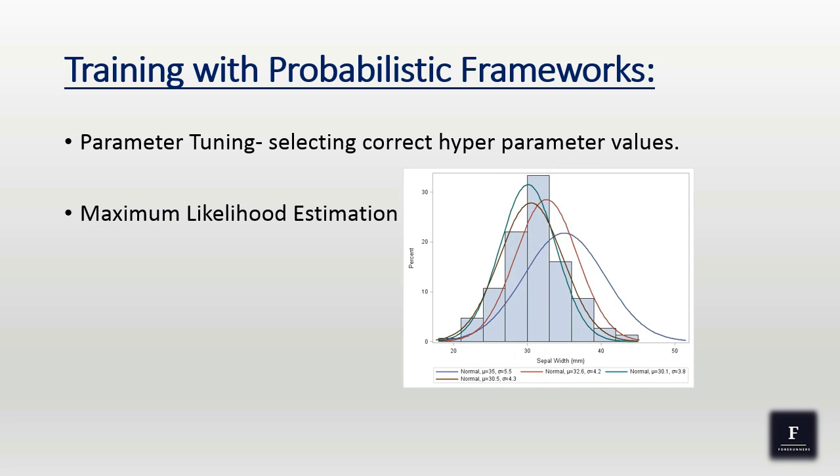As you can see, there are various curves with different values for mean and sigma. The value of mean 30.1 and sigma 3.8 gives us the curve that best fits our parameter values and data values.